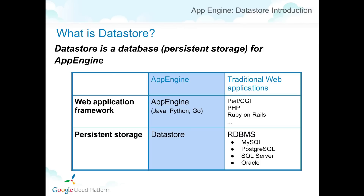This is not an App Engine-specific problem. If you've worked on other traditional web applications such as CGI or PHP, relational databases serve that role. Datastore for App Engine is a counterpart of the relational database, or RDB. So the question is: why don't we use an RDB? Why does Google provide Datastore instead? The answer is easy: scalability. If App Engine is highly scalable, the Datastore must also match its scalability.